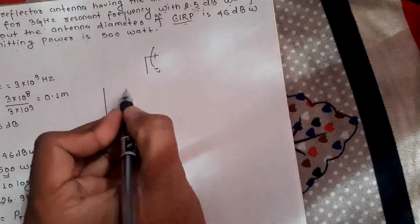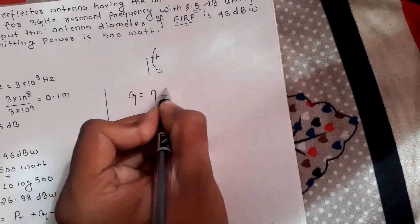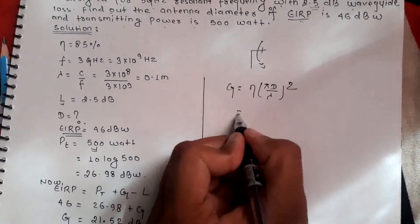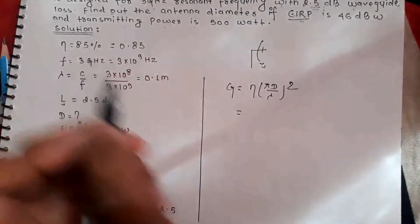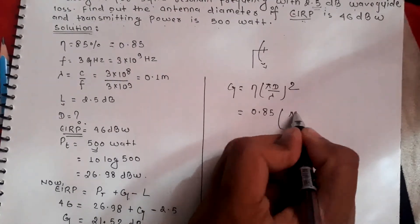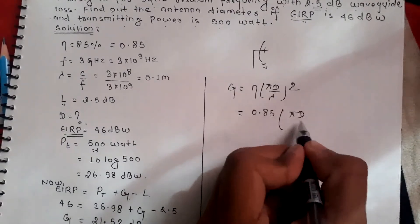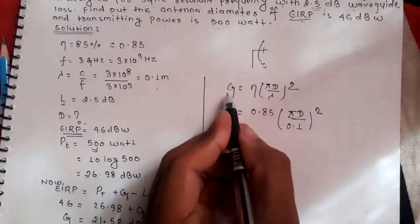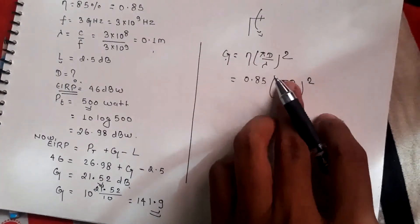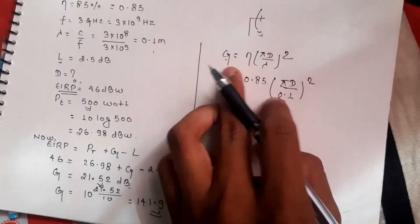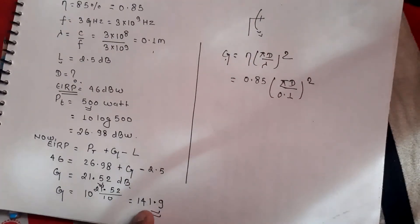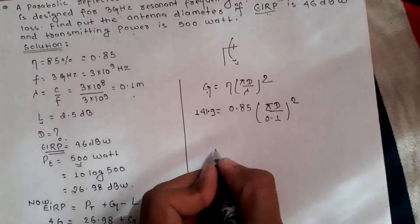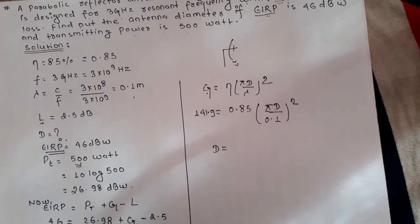Using G = η × (πD/λ)², we substitute: efficiency η = 0.85, wavelength λ = 0.1 m, and gain G = 141.9 (linear form). Solving this equation gives the antenna diameter D = 0.42 meters.